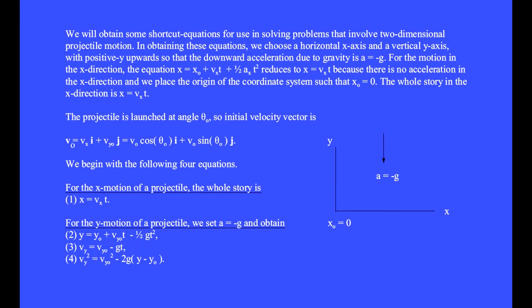We will obtain some shortcut equations for use in solving problems that involve two-dimensional projectile motion. In obtaining these equations, we choose a horizontal x-axis and a vertical y-axis with positive y upwards so that the downward acceleration due to gravity is a equals minus g equals minus 9.8 meters per second squared.